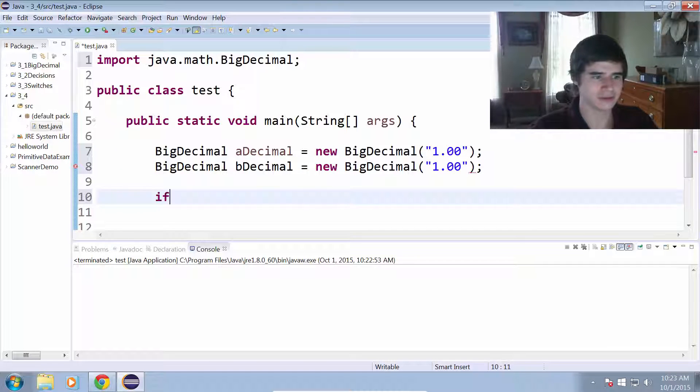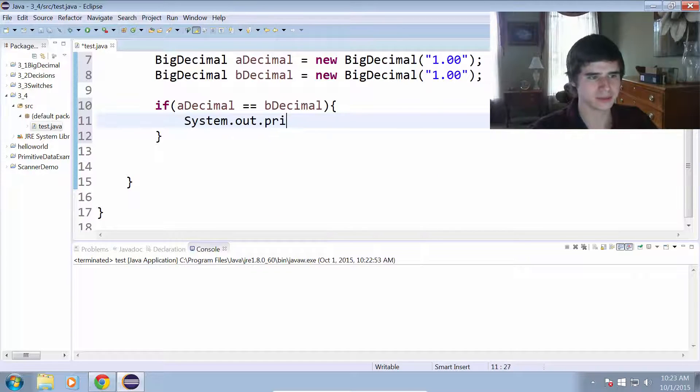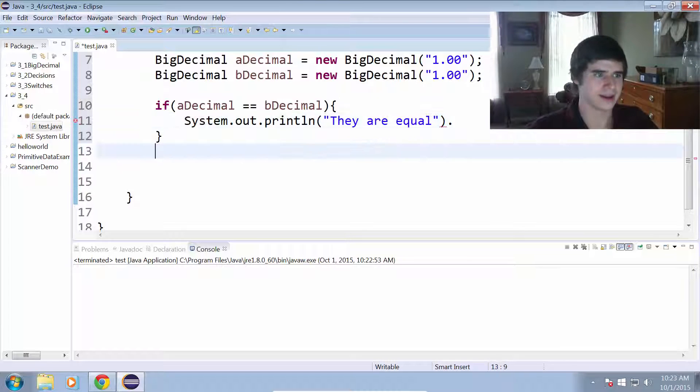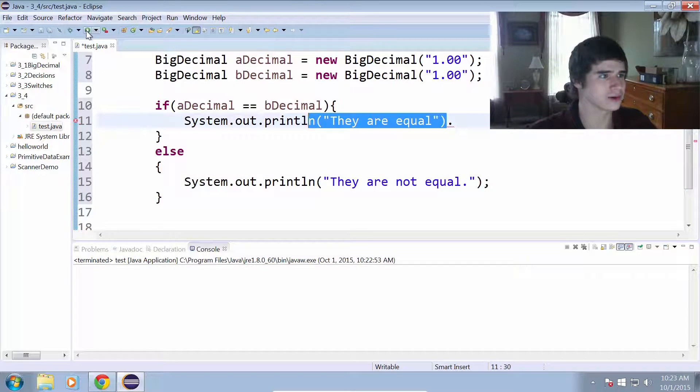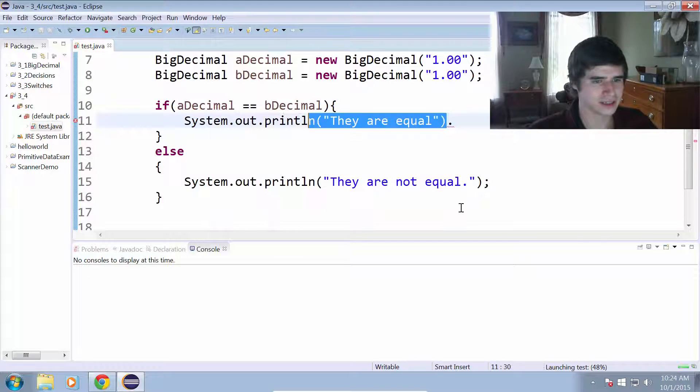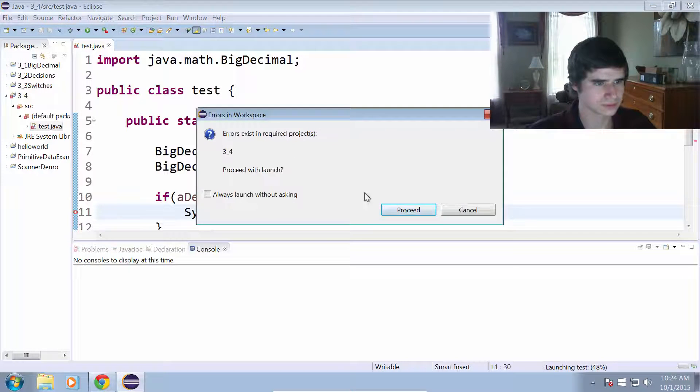Let's see what happens if we check to see if those two are equal using the equal to operator, which I said will not work. So if aDecimal equals bDecimal, do system out print line, they are equal. Now let's do else, system out print line, they are not equal. So with integers, we would expect that to return that they are equal or print that they are equal. We run this. What did I do wrong? Errors exist in project. I don't see any. Proceed.